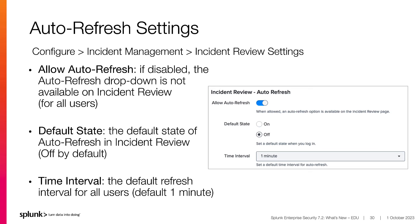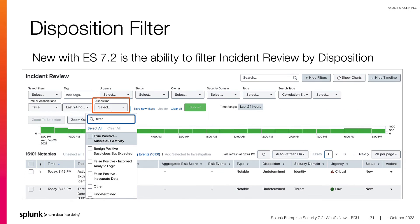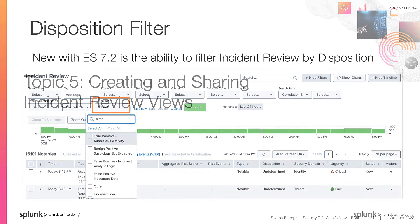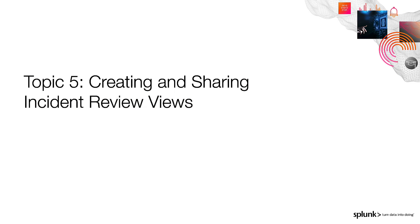The default state radio buttons configure the default state of the auto-refresh in Incident Review. This is the default state when a user loads the Incident Review dashboard, but it can be changed using the auto-refresh dropdown menu. By default, the auto-refresh is turned off. Finally, the Time Interval dropdown configures the refresh interval for all ES users. The default interval is one minute.